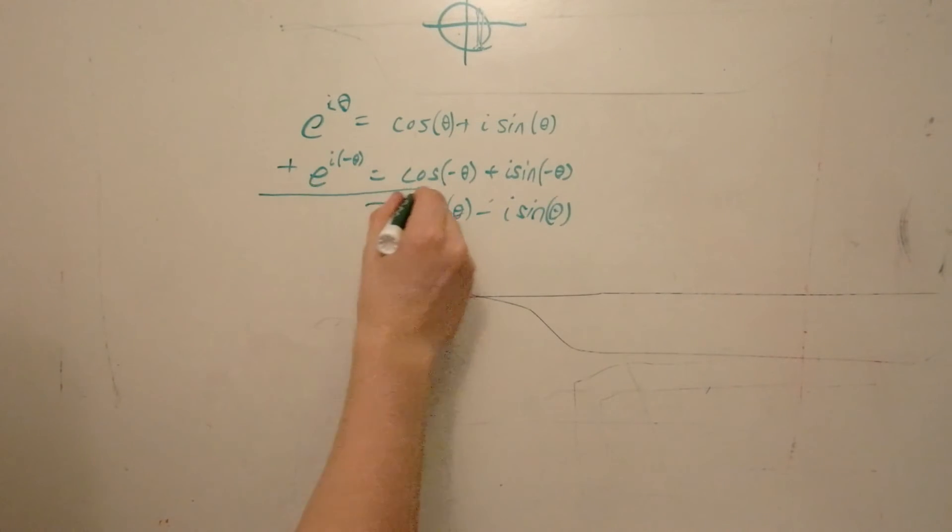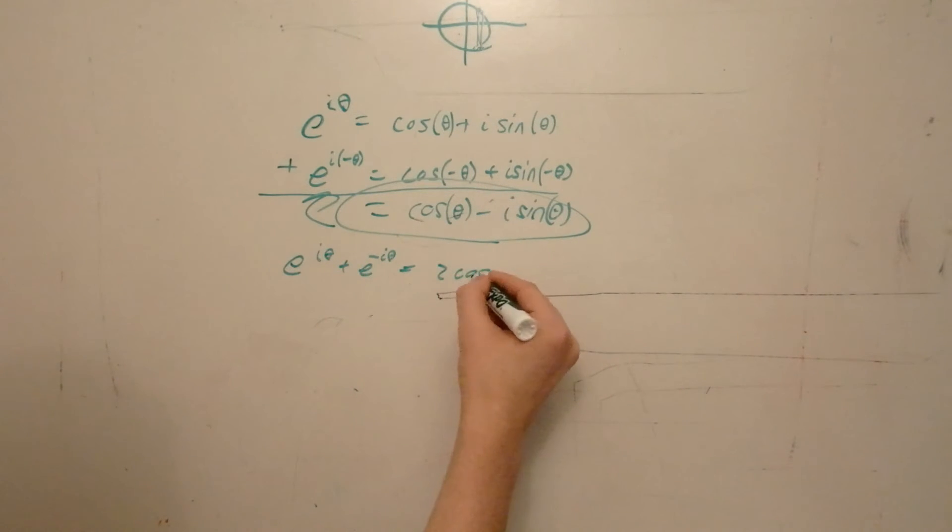So then we can just add these two together, or this comes up here, which gives us e to the i theta plus e to the minus i theta is equal to two cosine of theta. i sine crosses out. So now we can simplify in terms of cosine.